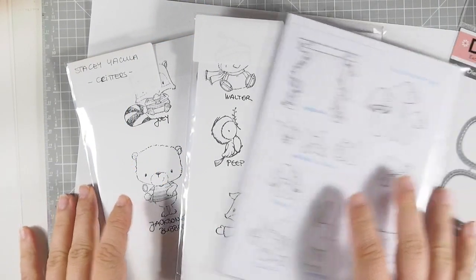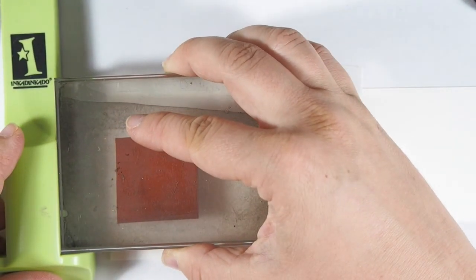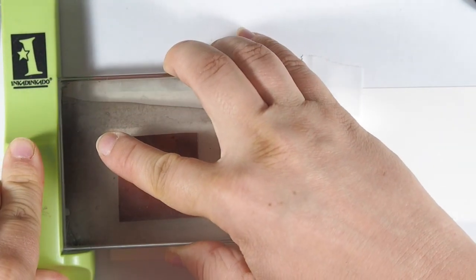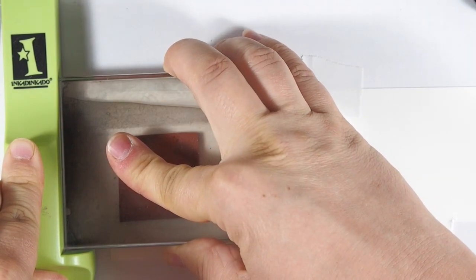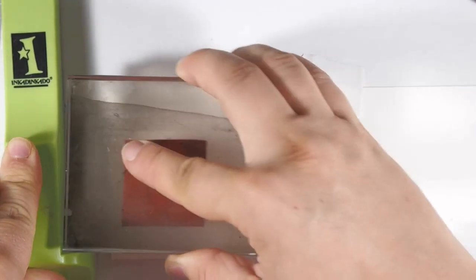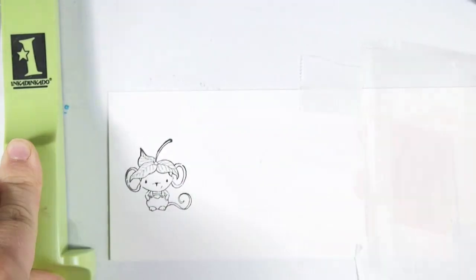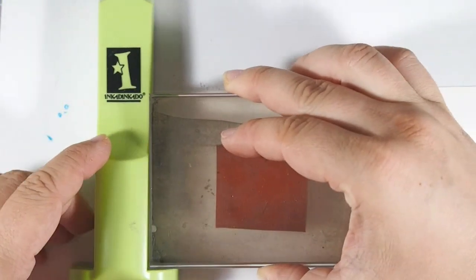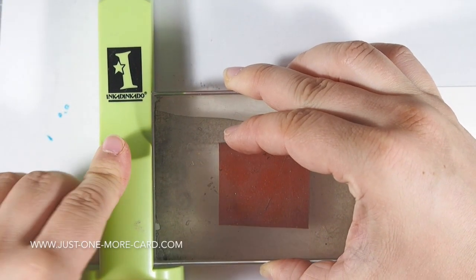Here are the stamps that I'm going to be using, they are from Purple Onion Designs and they are red rubber stamps. And I'm using my Stamp-A-Majig here, not to use it for precise positioning, but just in case I need to double stamp, it's easier to have the Stamp-A-Majig at hand.